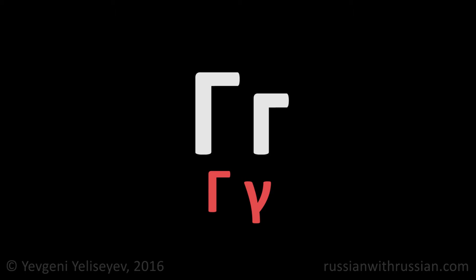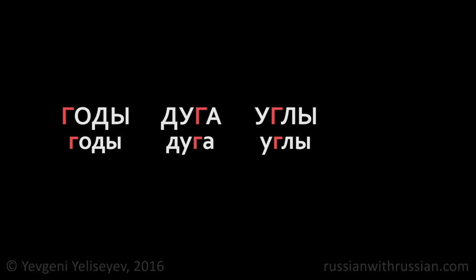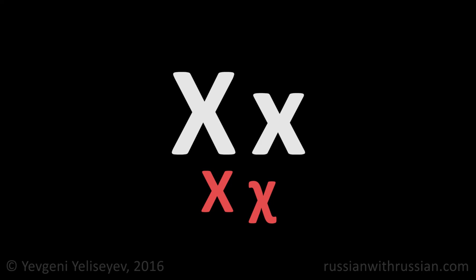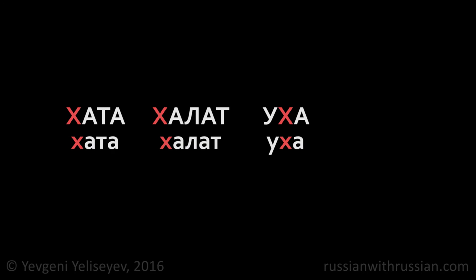For specifying the sound Г, we use the letter Г, a Cyrillic analog of the Greek letter ГАМА. For example: ГОДЫ, ДУГА, УГЛЫ, УГОН. This letter, called ХА, is similar to the Greek letter ХИ and specifies the sound Х. Examples: ХАТА, ХАЛАТ, УХА, МАХАЛ.